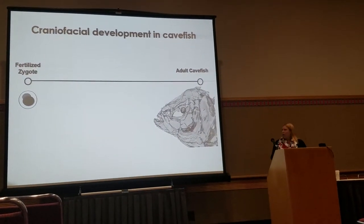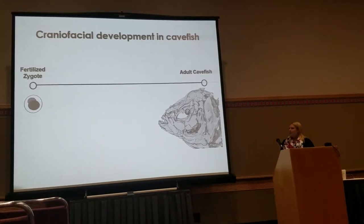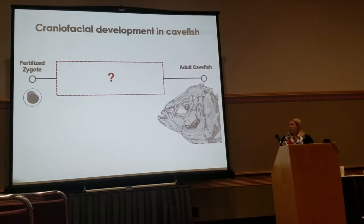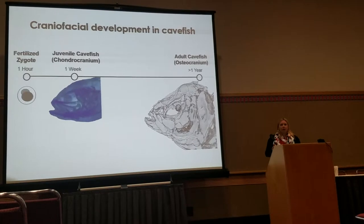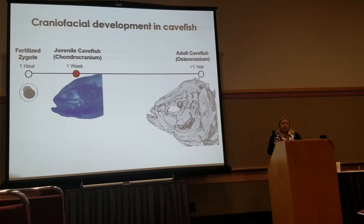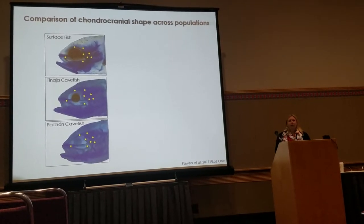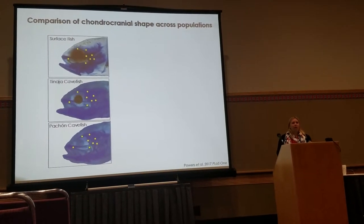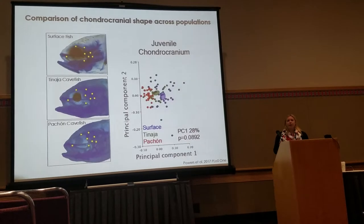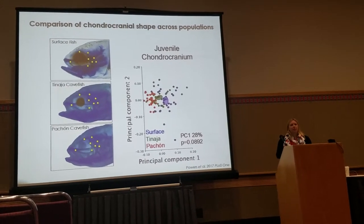We wanted to find out why this is happening, and to do that we had to look across life history. Many studies focused on adults and very early development, so we were interested in what's going on in between — over ontogeny and the development of the cranium. We started with the chondrocranium, or cartilage. In juveniles about one week old, the skull is mostly just cartilage. Using geometric morphometrics — a shape analysis using homologous landmarks — we asked whether there are any differences in overall chondrocranium shape between surface fish and two distinct cave fish populations. We found there really aren't any shape differences; their shapes are overlapping on principal component analysis.